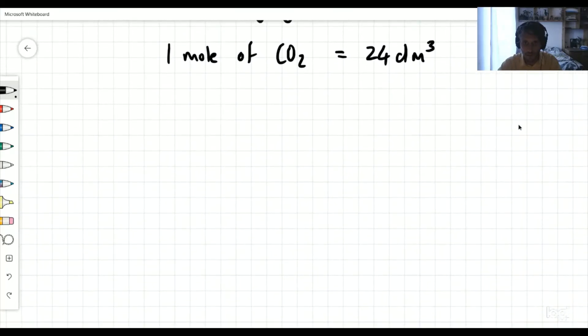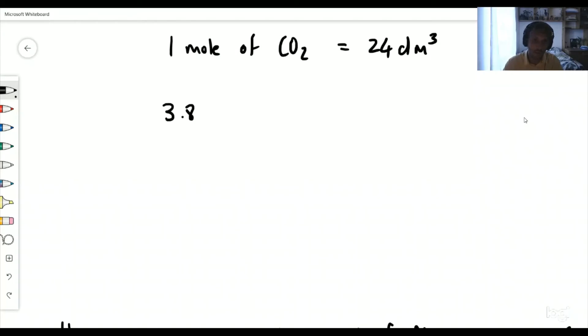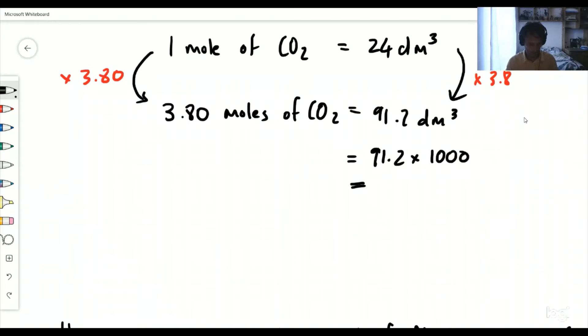Now we want to know what is 3.8 moles. Remember from previous calculations that if we've got one mole, we can use a simple calculation. How does 1 get to 3.8? Times by 3.8. So we do the same thing to this side. Times by 3.8. You simply get out your calculator, 24 times 3.8, and we get 91.2 decimeters cubed. Now, if you wanted to change this to centimeters cubed, you would simply times this by 1000, which gives you 91,200 centimeters cubed.